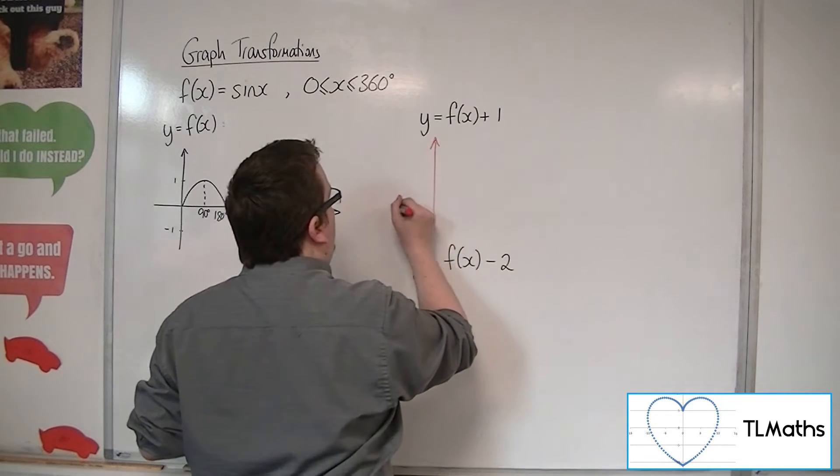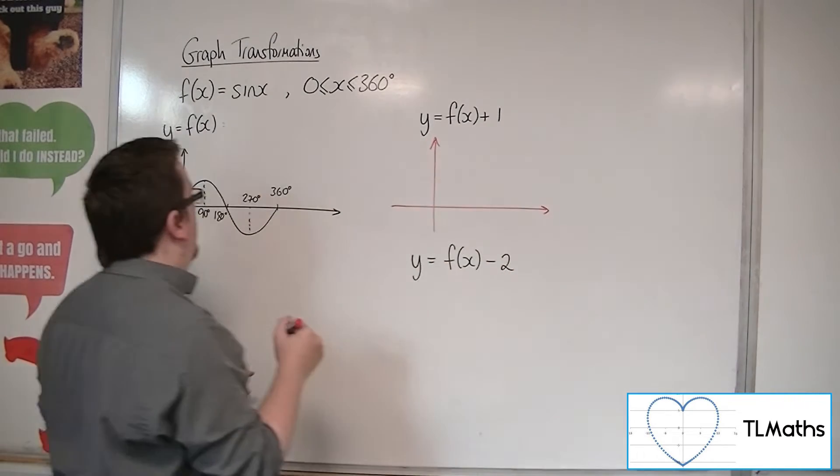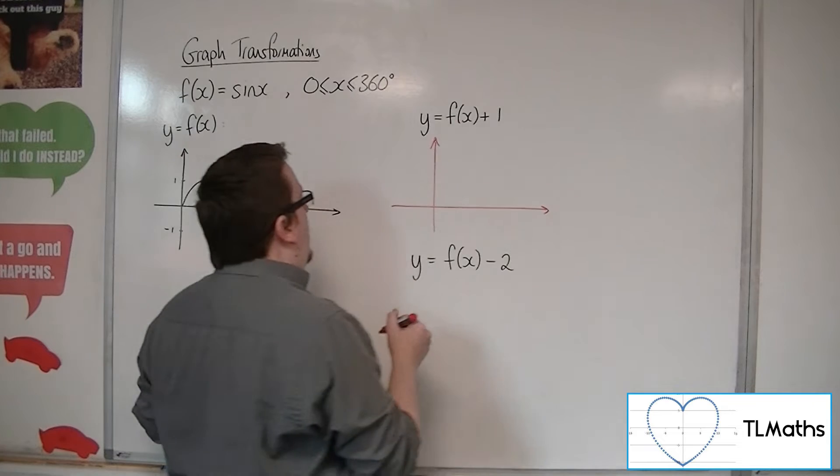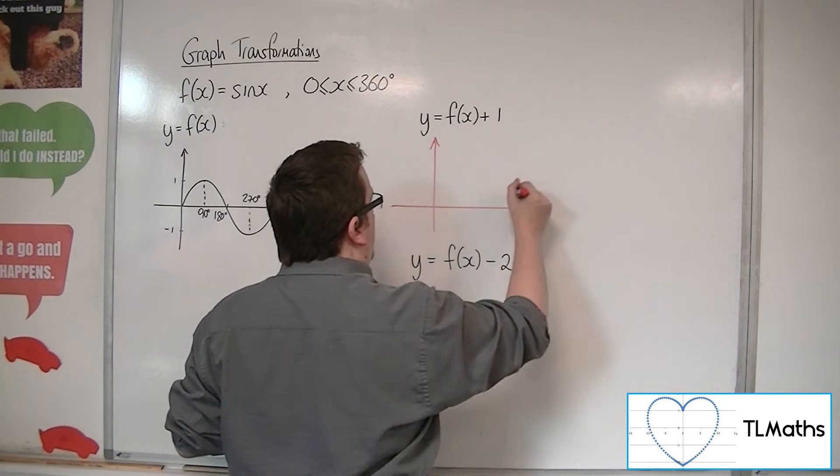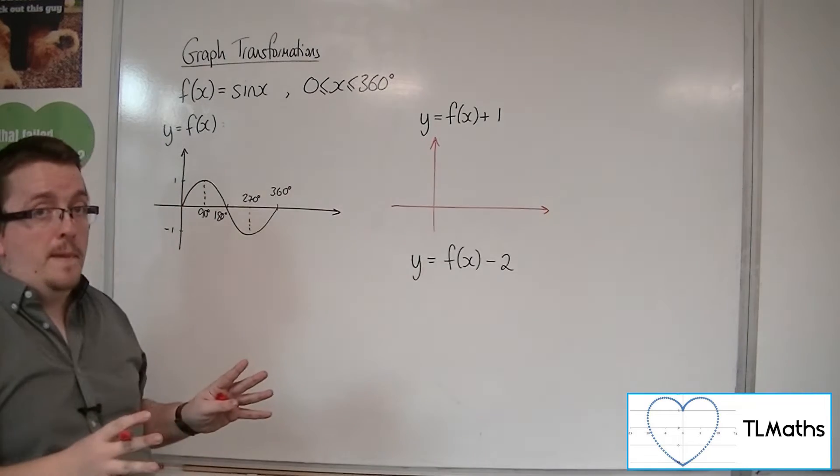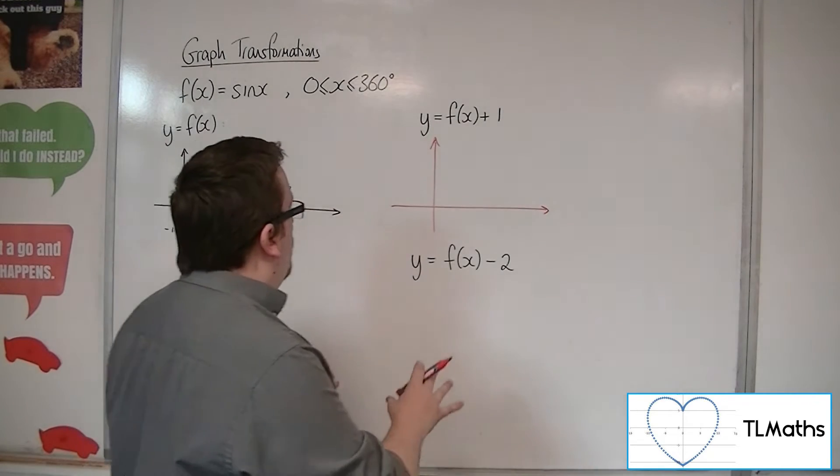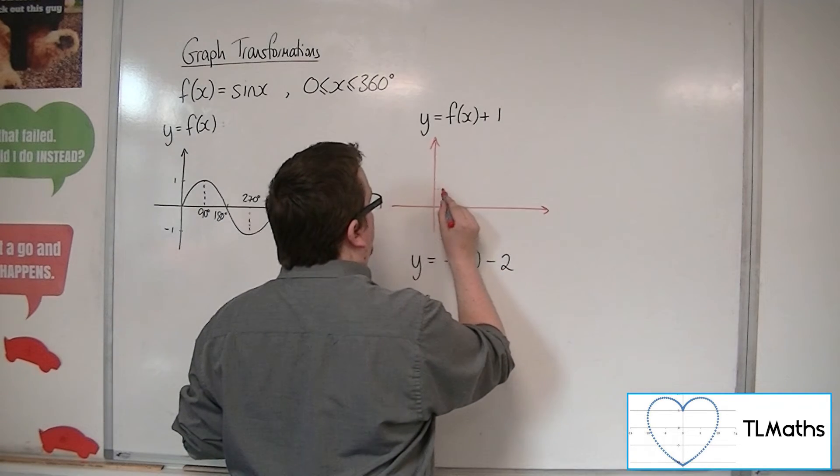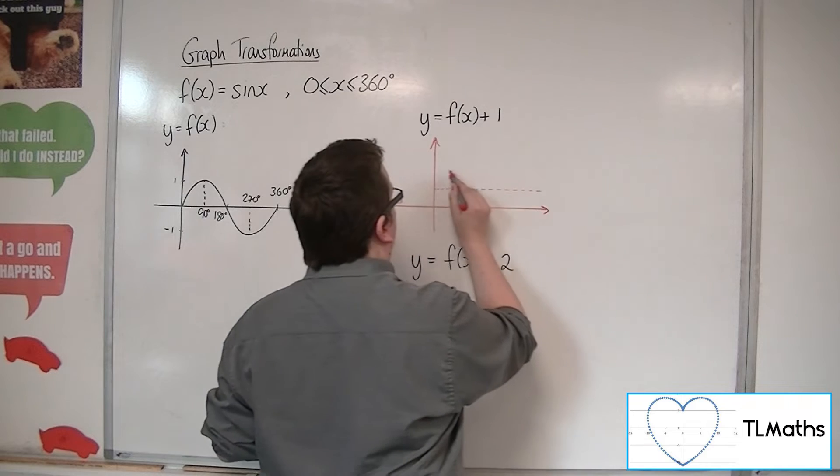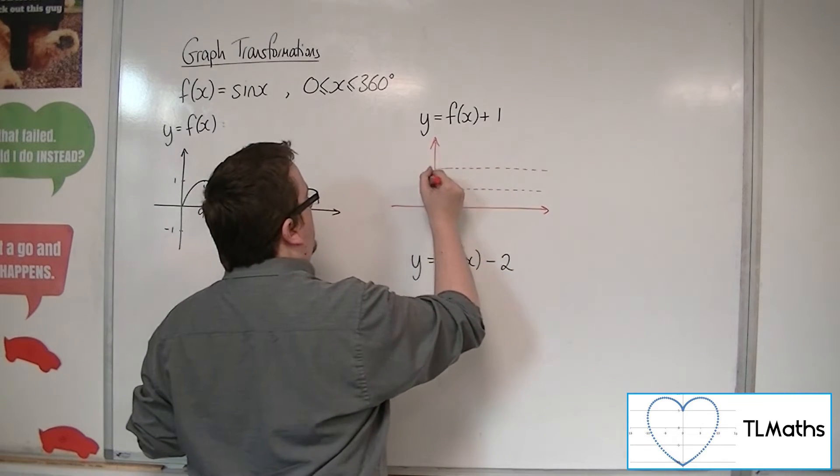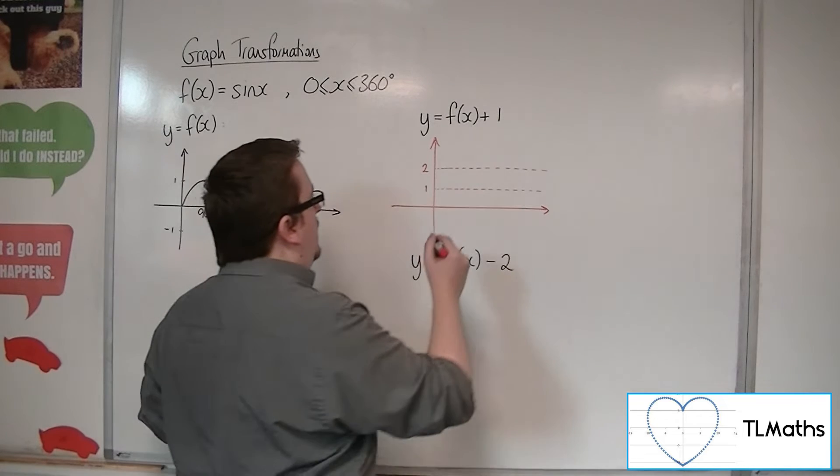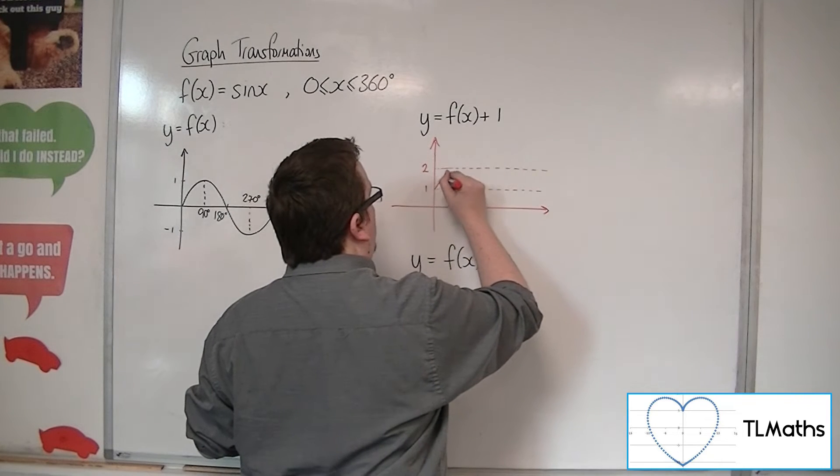So when I re-sketch the curve, instead of going through like this, it must be going through like this. Now, in order to help me, I'm going to draw in some guidelines. So that's when we've got 1 and 2. So the curve will look something like this.